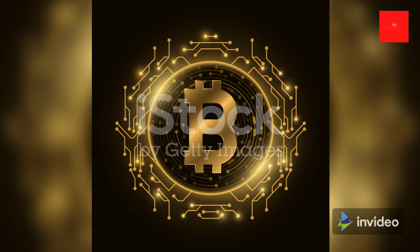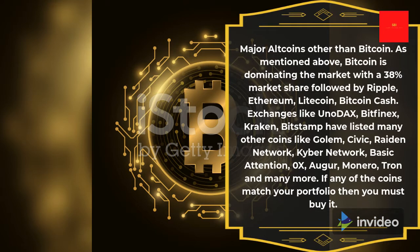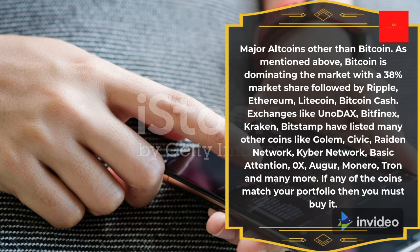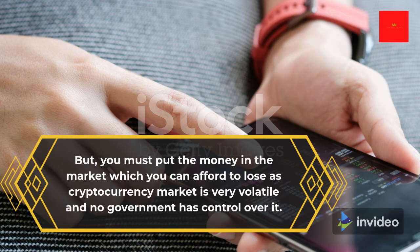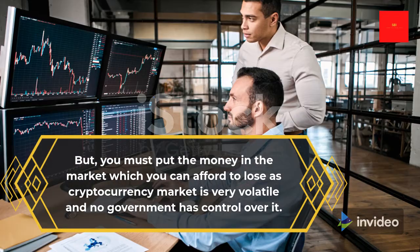Major altcoins other than Bitcoin: Bitcoin is dominating the market with a 38% market share, followed by Ripple, Ethereum, Litecoin, and Bitcoin Cash. Exchanges like Unodax, Bitfinex, Kraken, and Bitstamp have listed many other coins like Golem, Civic, Raiden Network, Kyber Network, Basic Attention Token, 0x, Augur, Monero, Tron, and many more. If any of the coins match your portfolio, you must buy it — but only invest money in the market that you can afford to lose, as the cryptocurrency market is very volatile and no government has control over it.